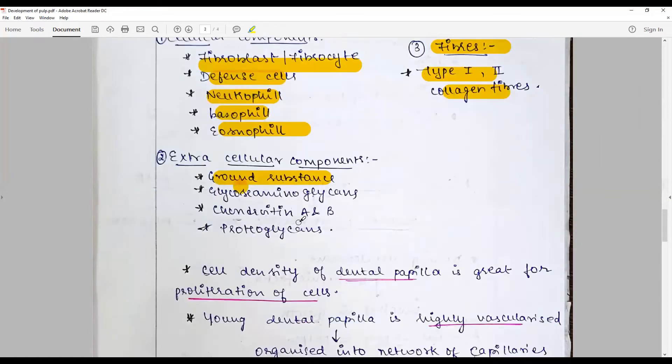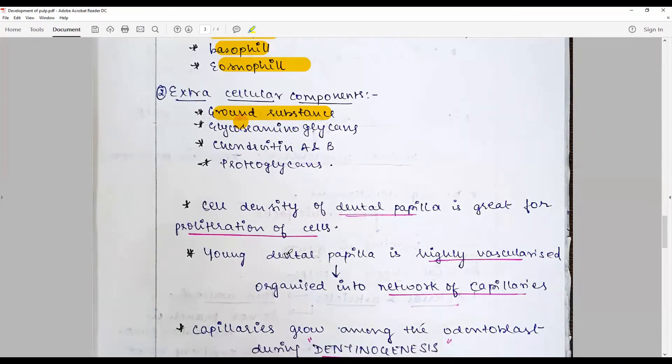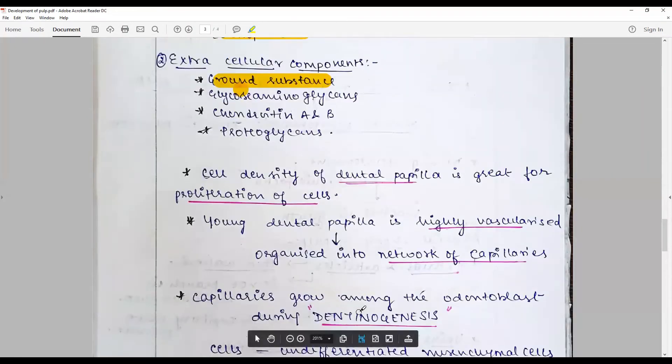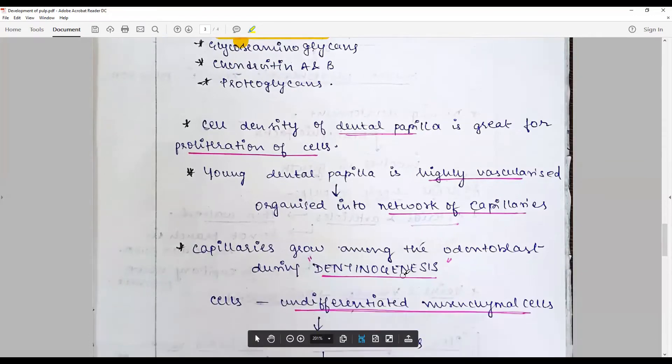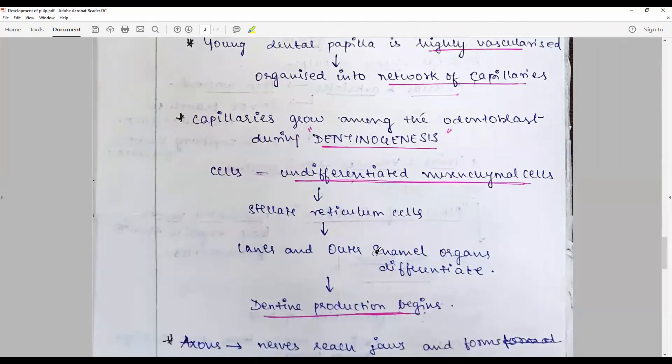The extracellular components include the ground substance, glycosaminoglycans, chondroitin A and B sulfates, and proteoglycans. The cell dental density of dental papilla is great for proliferation of cells and dependent upon the age. The young dental papilla is highly vascularized and organized into a network of capillaries. The capillaries grow among the odontoblasts during dentinogenesis. The cells that are undifferentiated mesenchyme appear to be stellate reticulum cells.